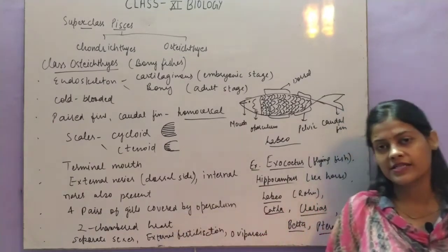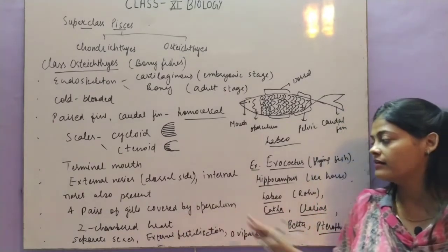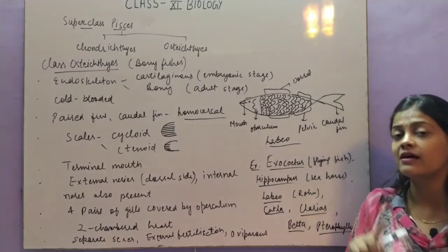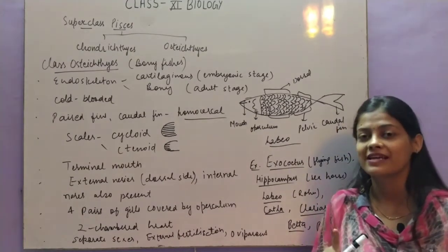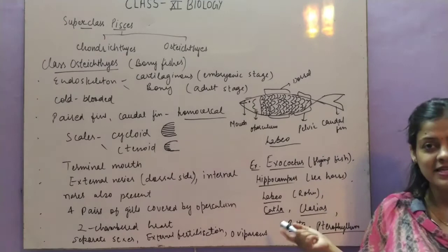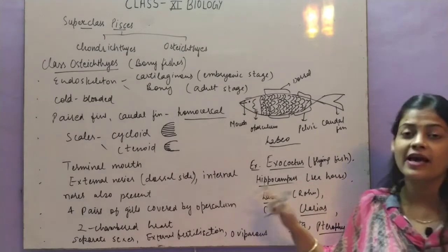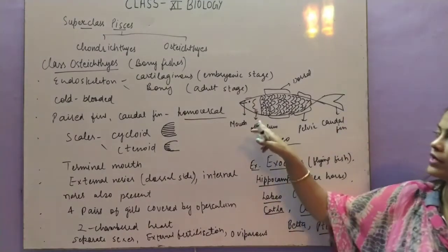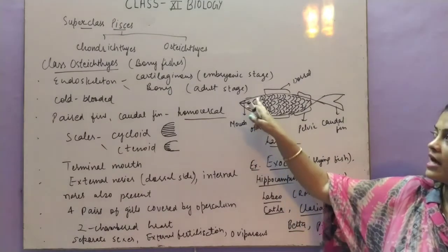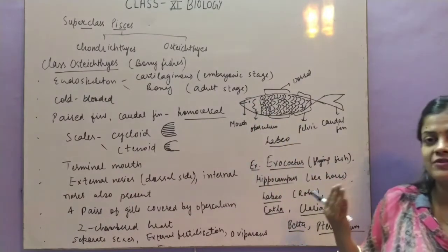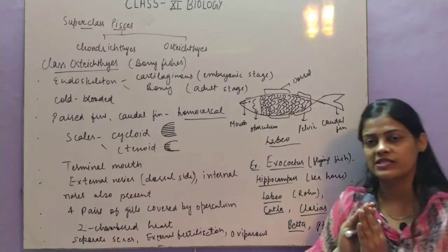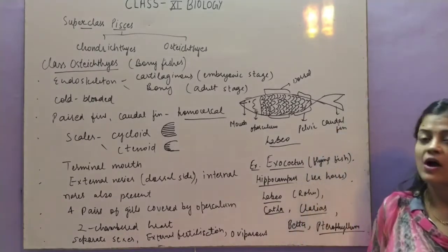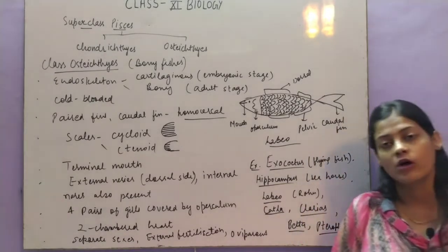Four pairs of gills are present and they are covered by an operculum. In Chondrichthyes there was no fold of skin covering the gill slits, but in Osteichthyes this fold of skin covering the gill slits is called the operculum. When you look at a common fish you can see this folded skin structure, which is the operculum, found only in Osteichthyes.